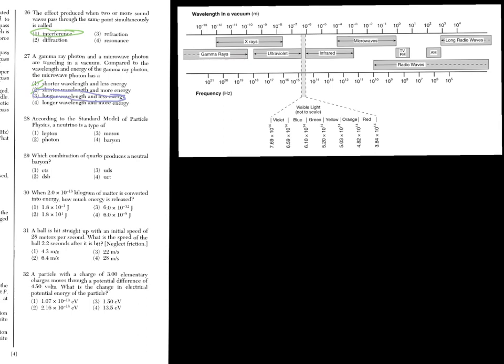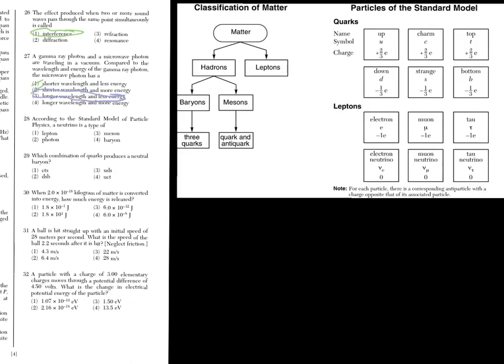Number 28. According to the standard model of particle physics, that means we have to look at the reference table. We're looking for the neutrino. Neutrinos, we've got to look at this section right here. It's not in the quarks, but we do find it here in this section in leptons. So it has to be a lepton. If you know how to use these reference tables, you could probably get through half of these regions.